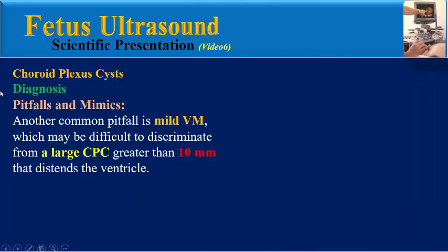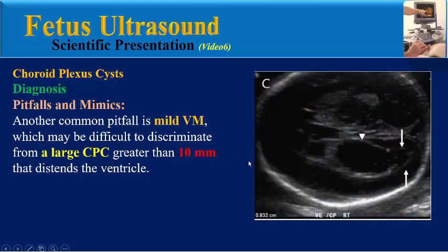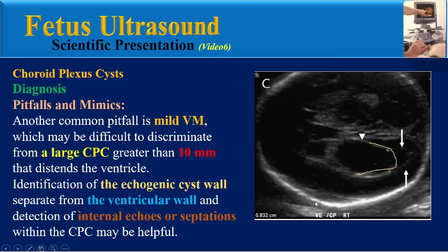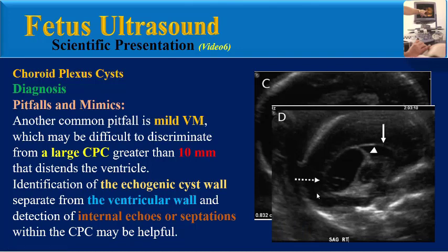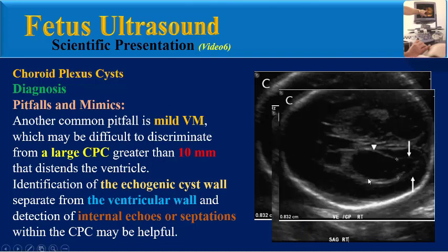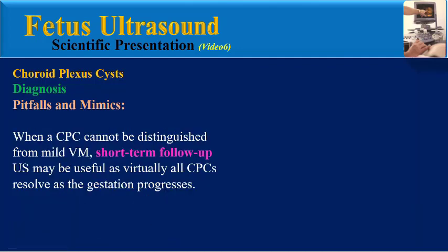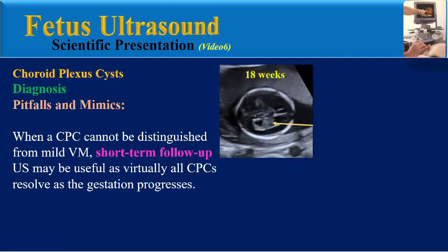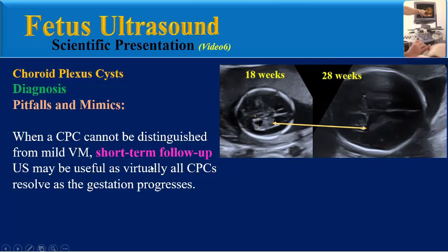Another common pitfall is mild ventriculum gallii, which may be difficult to discriminate from a large cyst greater than 10 mm that distends the ventricle. Identification of the echogenic cyst wall separate from the ventricular wall and detection of internal echoes or septation within the cyst may be helpful. The cyst may cause mass effect on the ventricle wall, but the measurement of the lateral ventricle is within normal range. When a cyst cannot be distinguished from mild ventriculum gallii, short-term follow-up ultrasound may be useful as virtually all cysts resolve as gestation progresses.